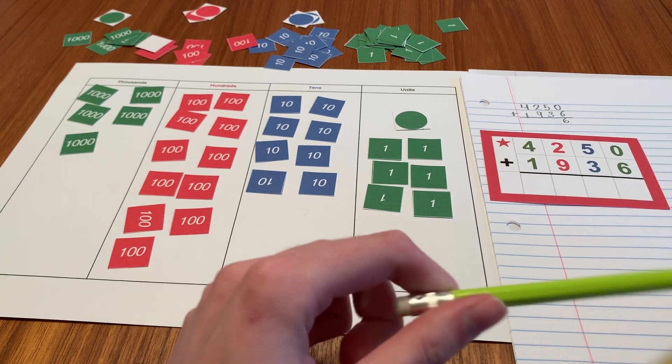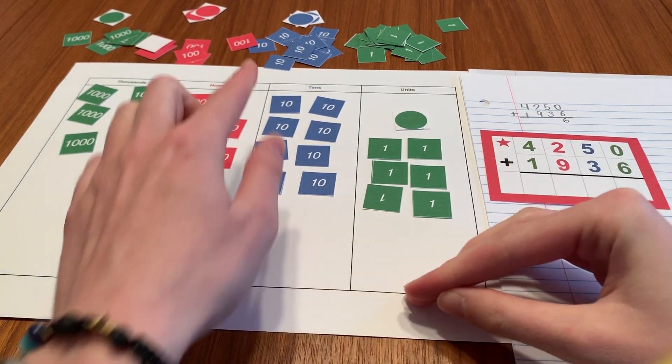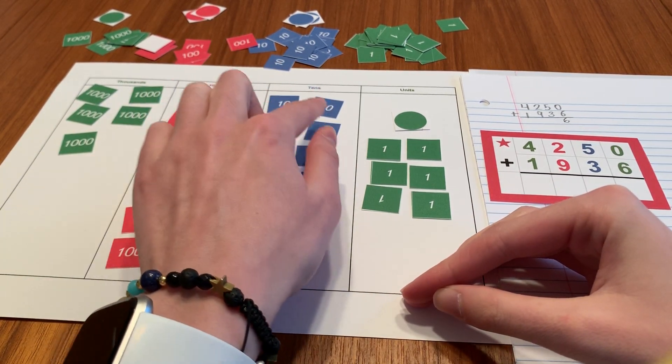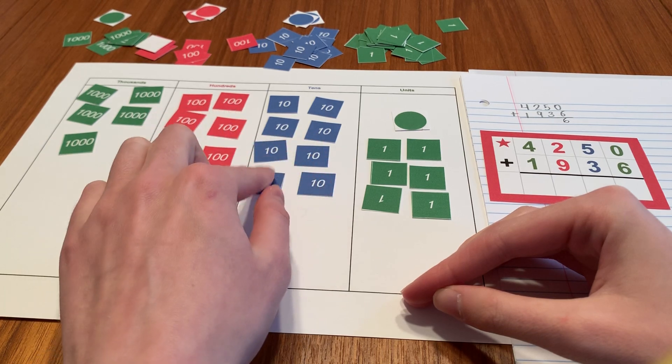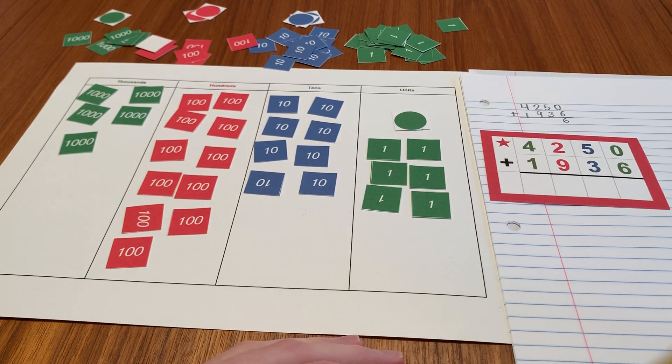Now I look at my tens. I had five tens plus three tens. Ten, twenty, thirty, forty, fifty, sixty, seventy, eighty. I have eight tens.